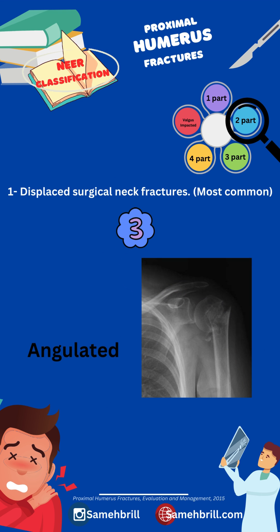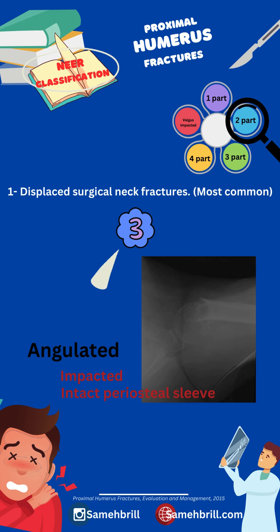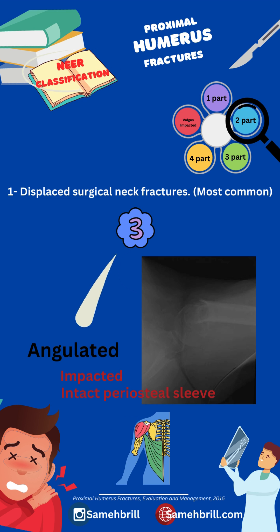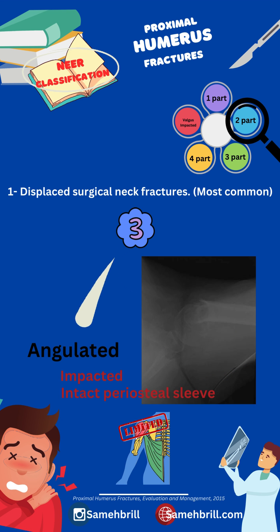In the angulated surgical neck fracture, the fracture is impacted and angulated greater than 45 degrees. In this fracture type, the posterior periosteal sleeve remains intact, and if left untreated, the residual angulation will cause limitations in elevation and abduction.